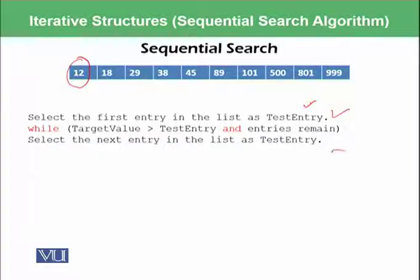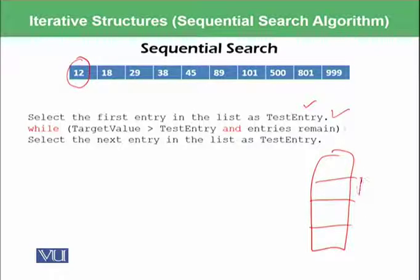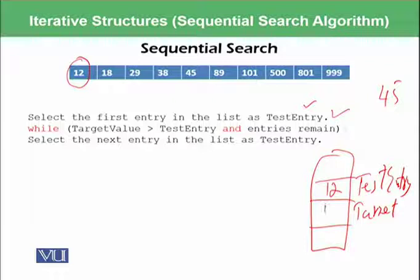So let's make a RAM as we are doing previously. So we have test entry over here and this includes 12, and target value which we want to search is 45. So target is 45.